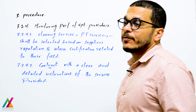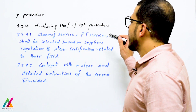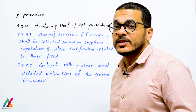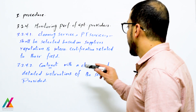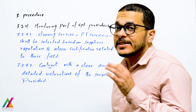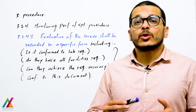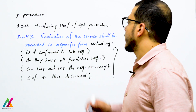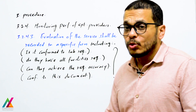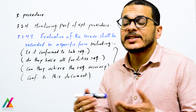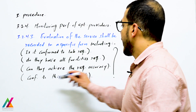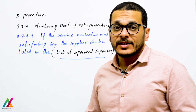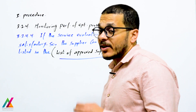Services such as cleaning, PT, calibration, or any other service shall be selected based on the supplier's reputation and international certification in their field. The lab shall have a contract with the external provider containing clear and detailed instructions of the service provided. After contracting, evaluation of the service shall be recorded in a specific form covering conformance to lab requirements, availability of required facilities, achievement of required accuracy, and conformance to this document.